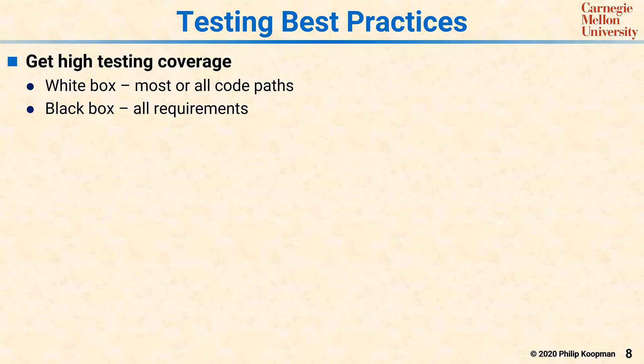Embedded software testing best practices revolve around getting the right amount of testing coverage depending on the needs of your system. Getting high testing coverage for white box means you must exercise most or all of the code paths in your software. For black box, it means you have to exercise all the requirements. Both white box and black box are required because each type of testing has its own type of blind spot.